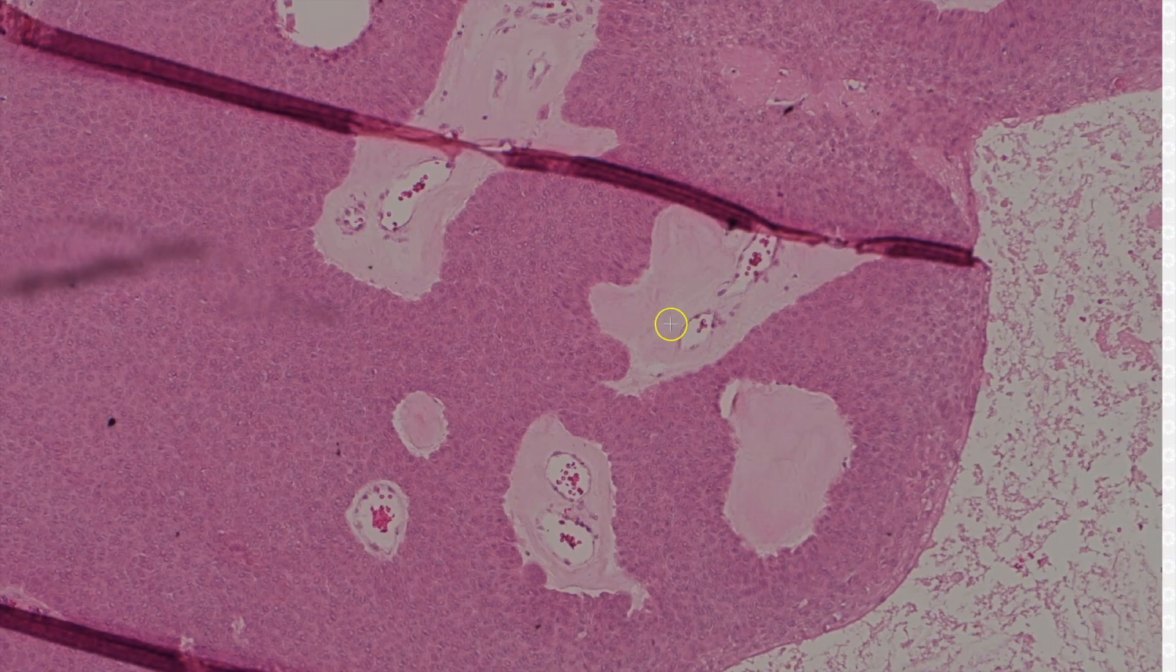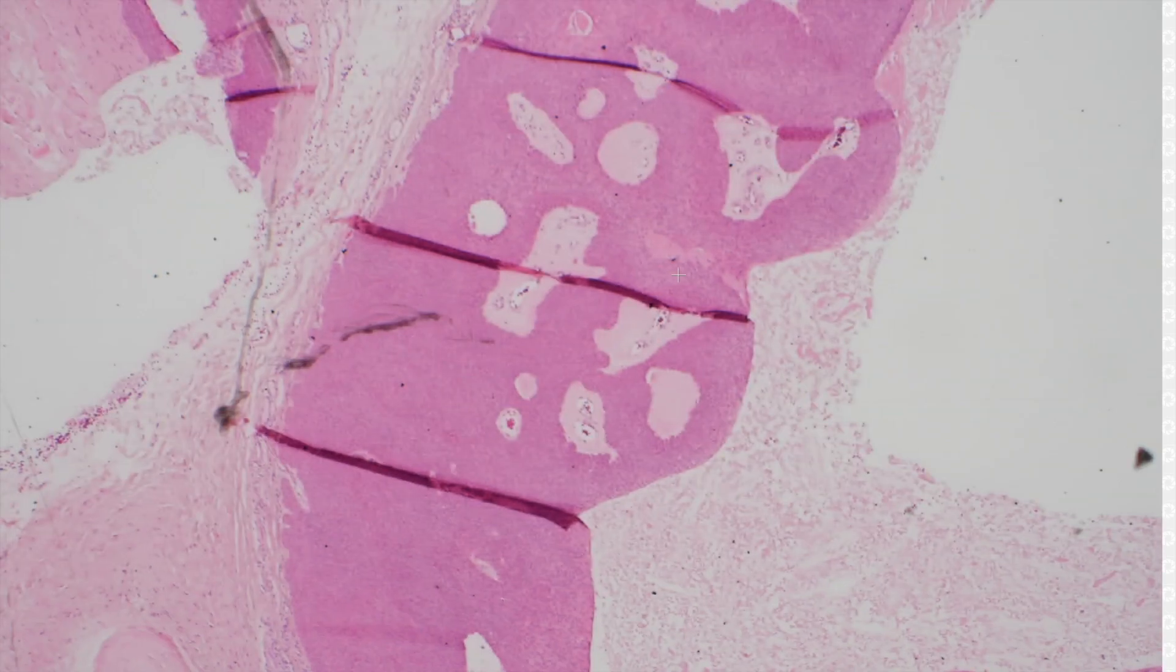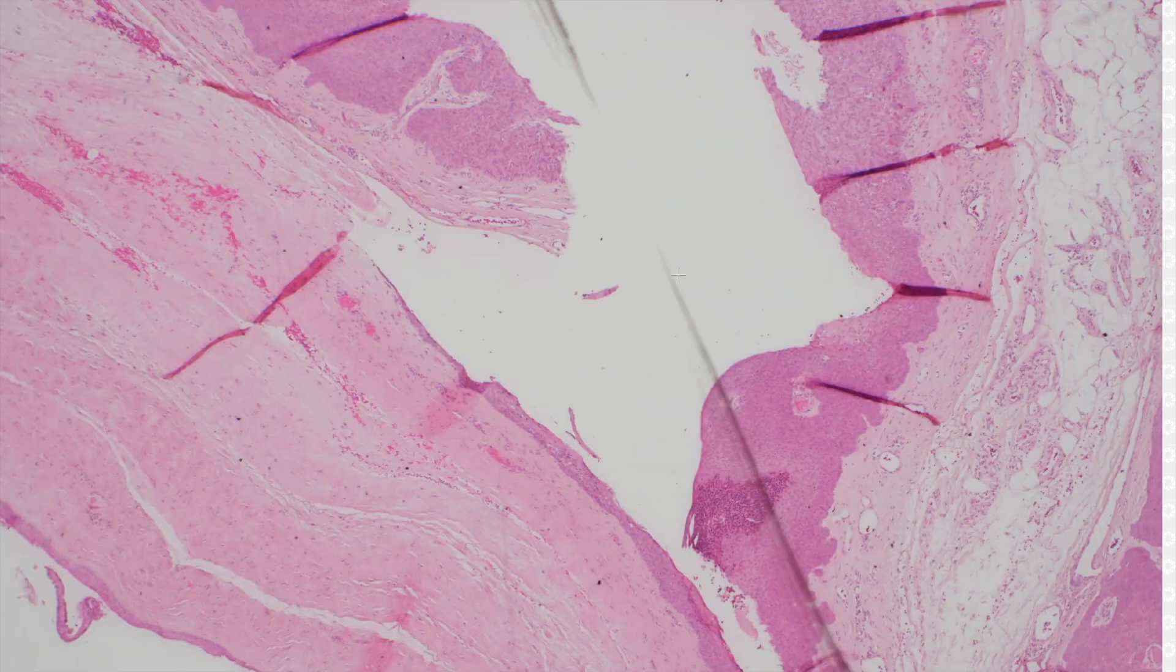There's very dense basement membrane material in here, which is a common feature for a wide variety of adnexal tumors. And the cystic spaces are common. So this is hydratonoma.